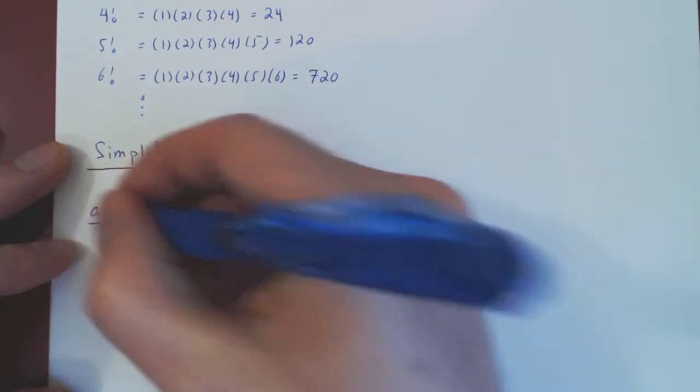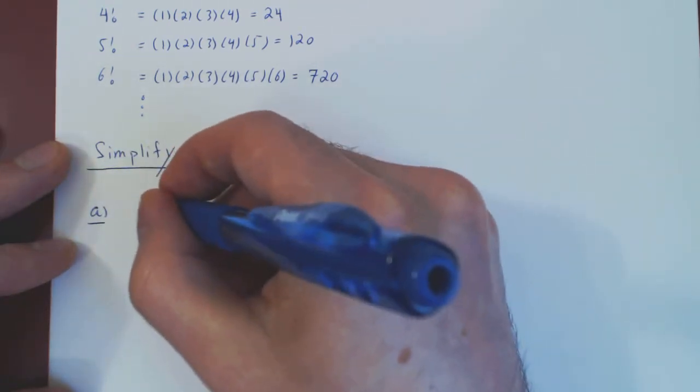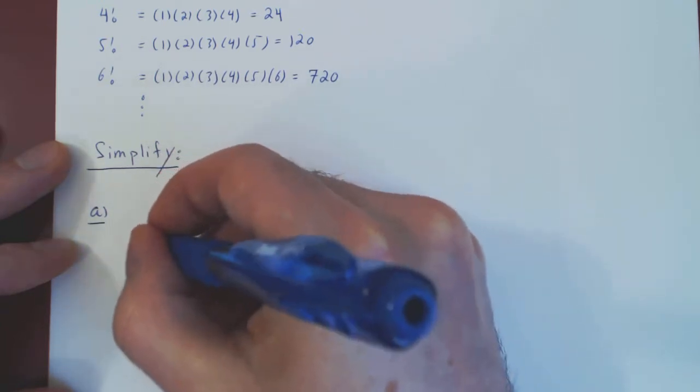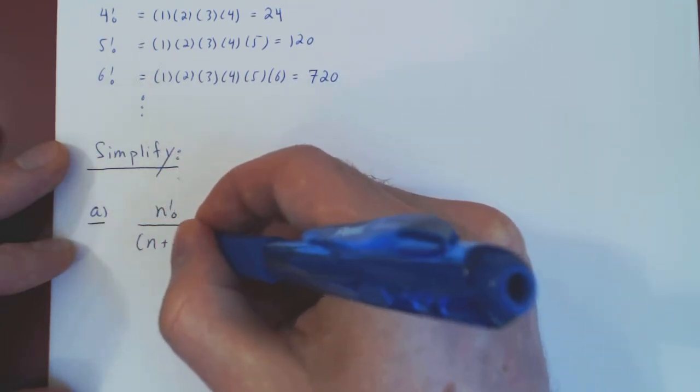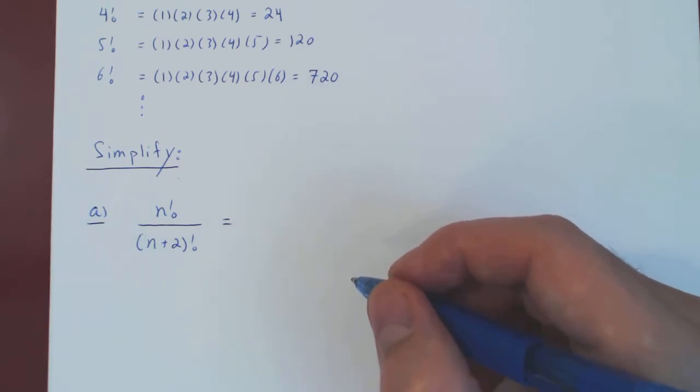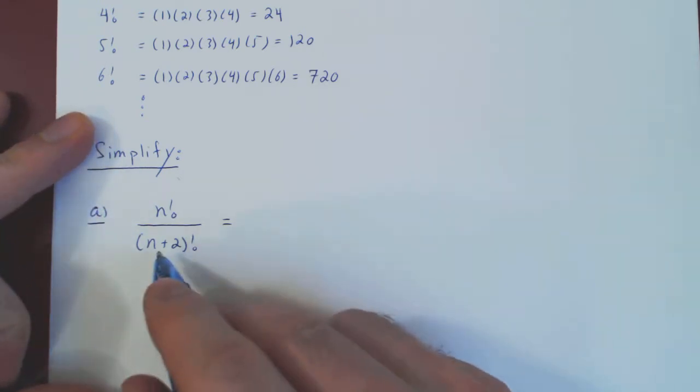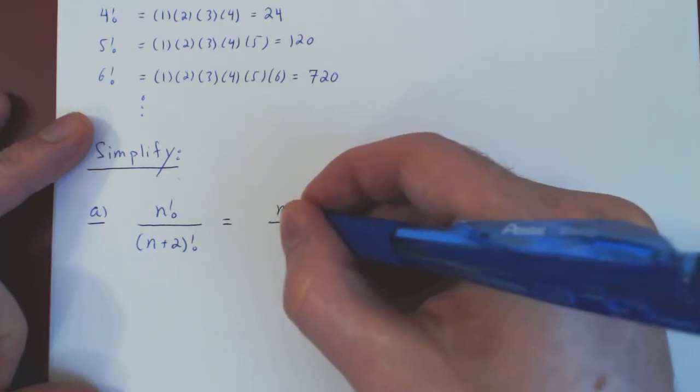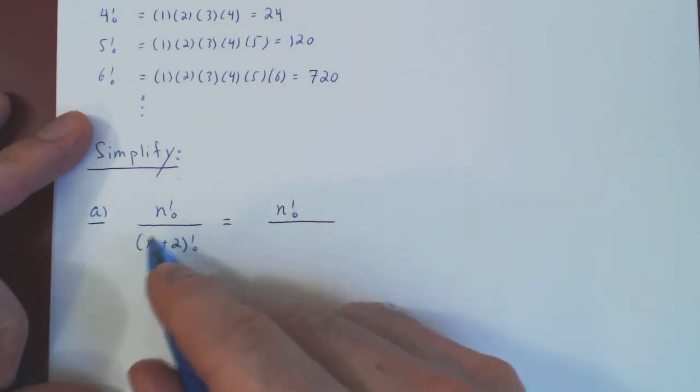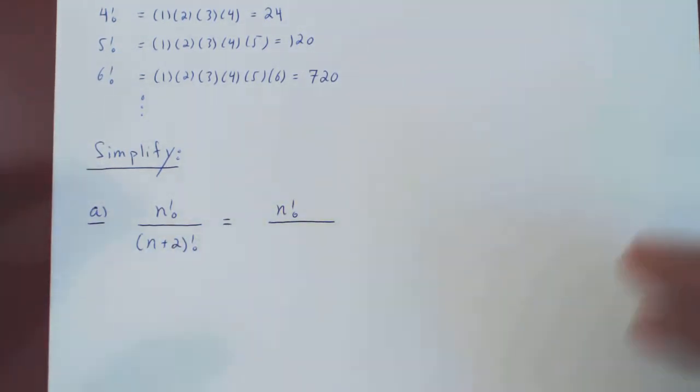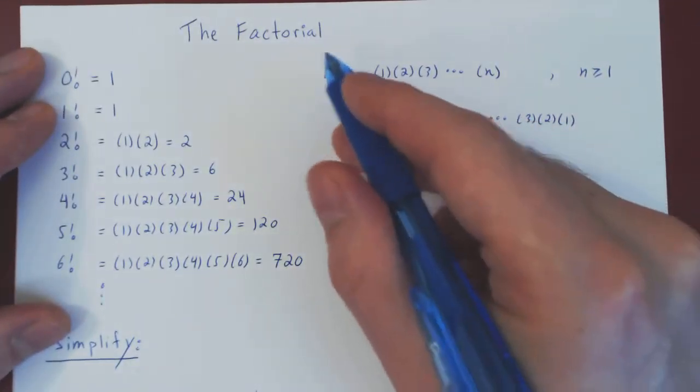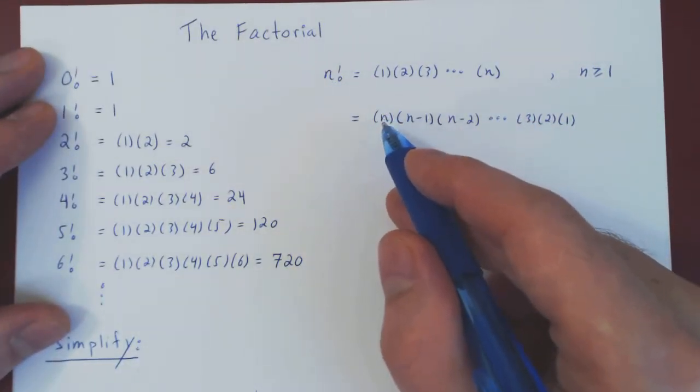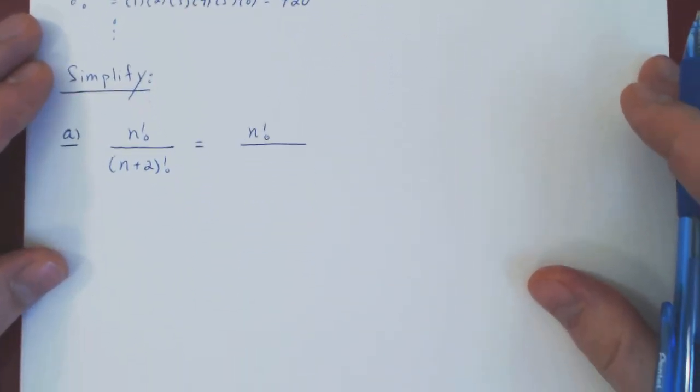So in the first case, we'll ask to simplify n factorial over n plus 2 factorial. As I've just said, we expand the larger factorial until we hit the smaller factorial. Well, n plus 2 is the larger factorial, so we leave on top n factorial. And when you have these expressions, it will always make it a little shorter if we write the factorial from the largest value down to the smallest value.